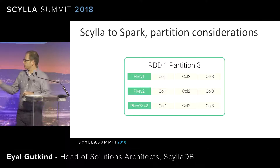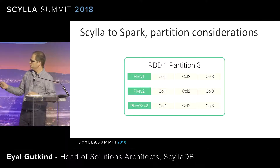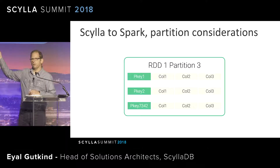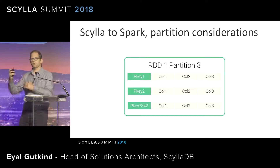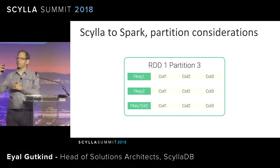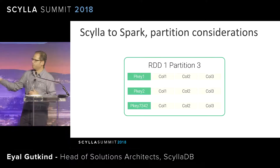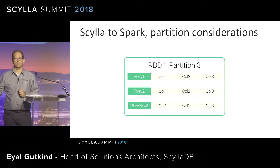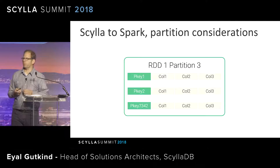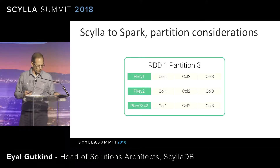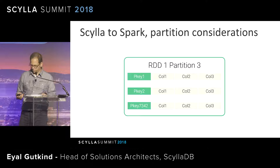When I try to read an RDD, the executor tries to fetch the information from Scylla and it's going to try to read a full table. But that table is now stored on different nodes. So you have a gather information process from each one of the Scylla nodes, and that's a costly operation.